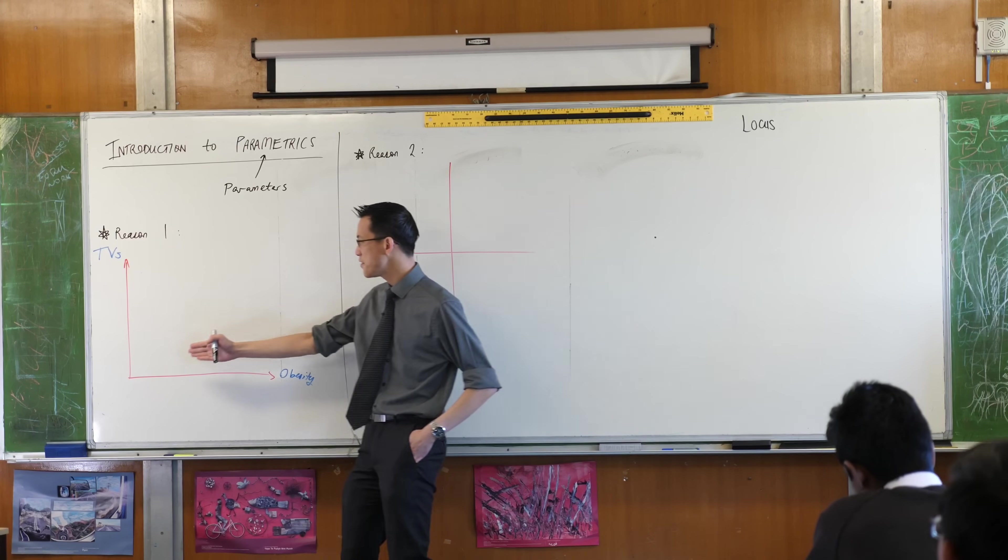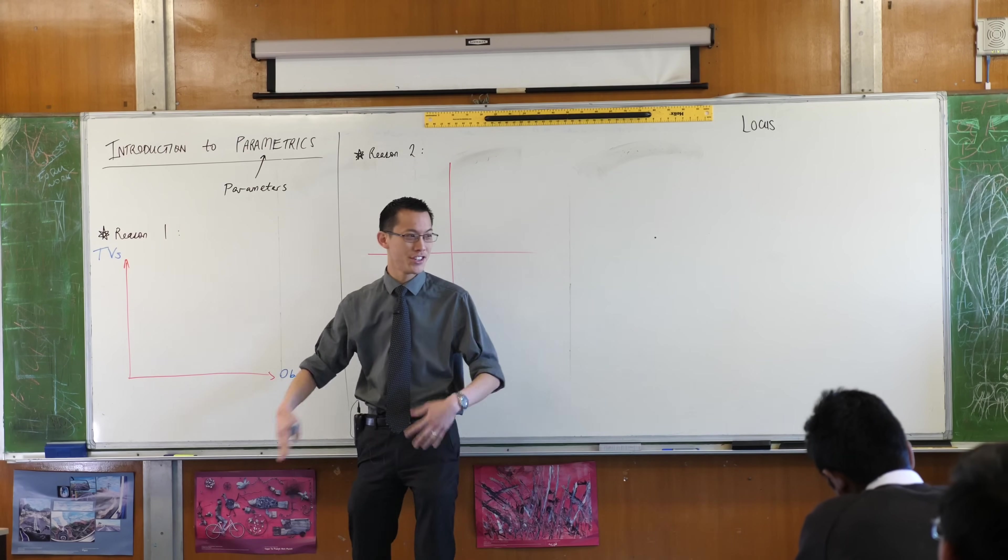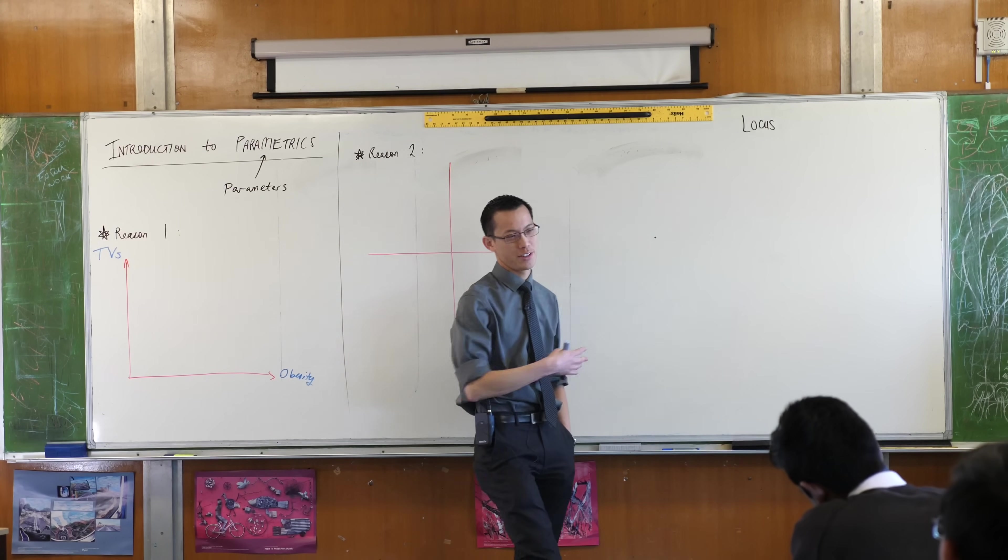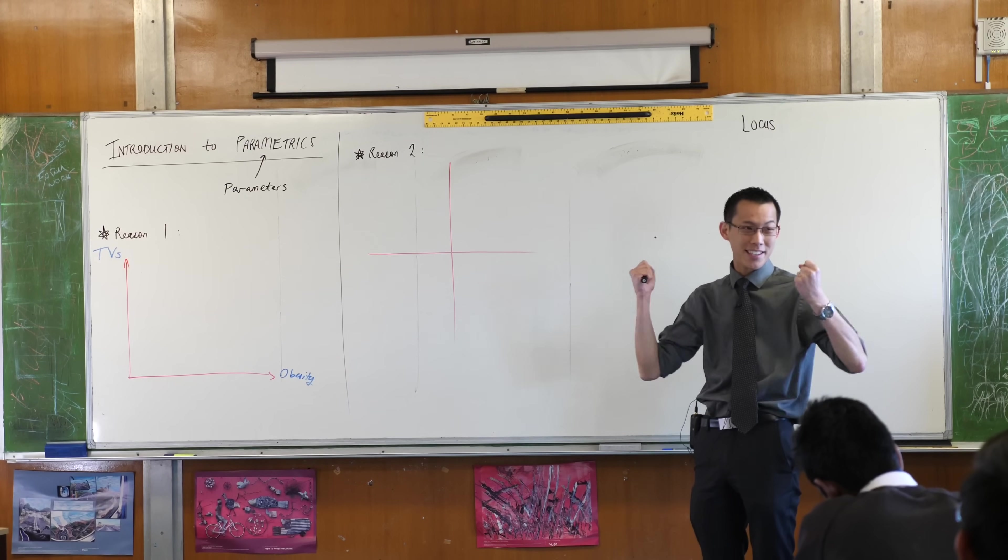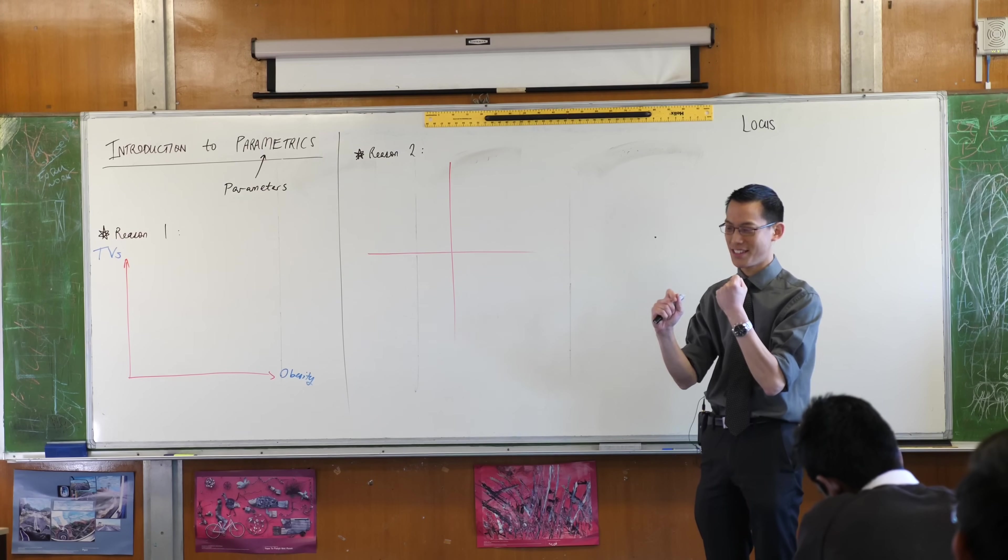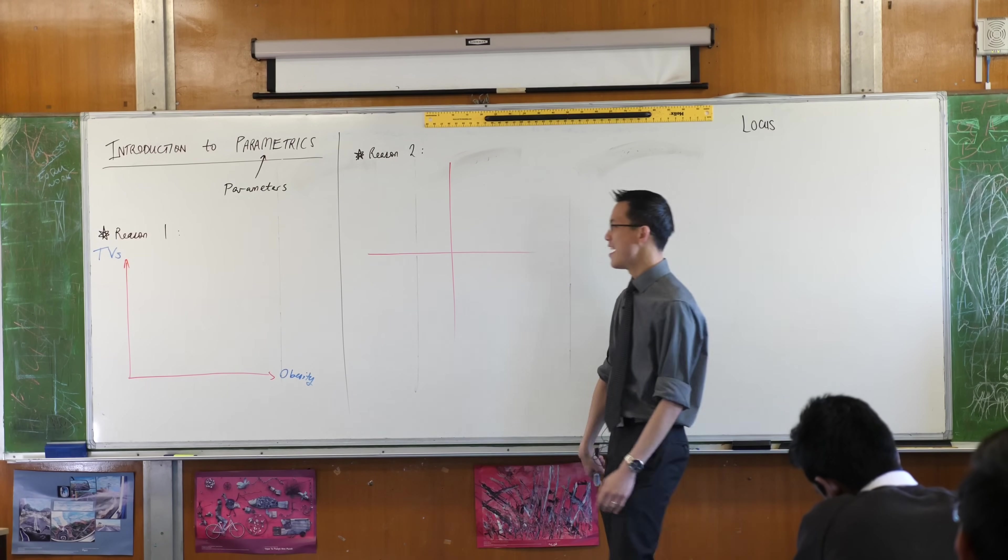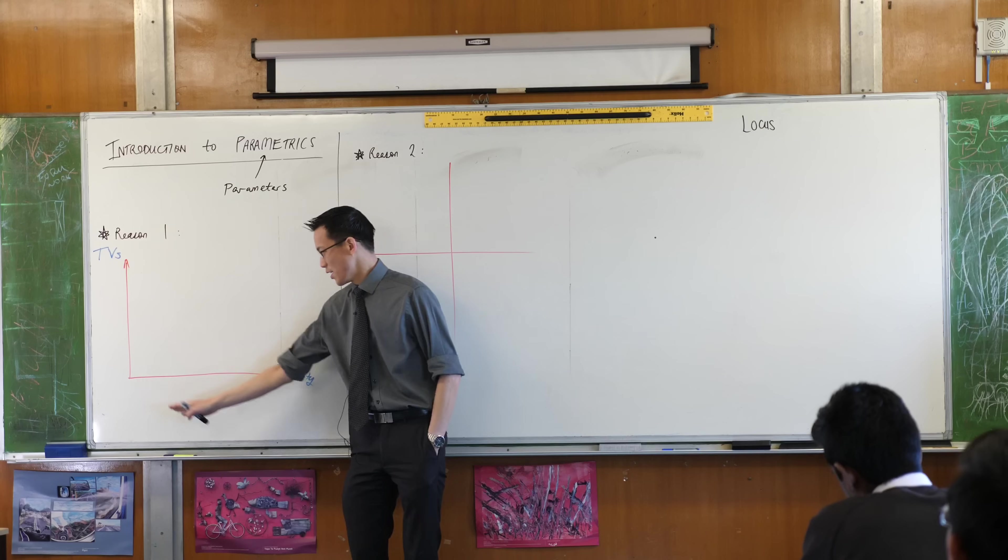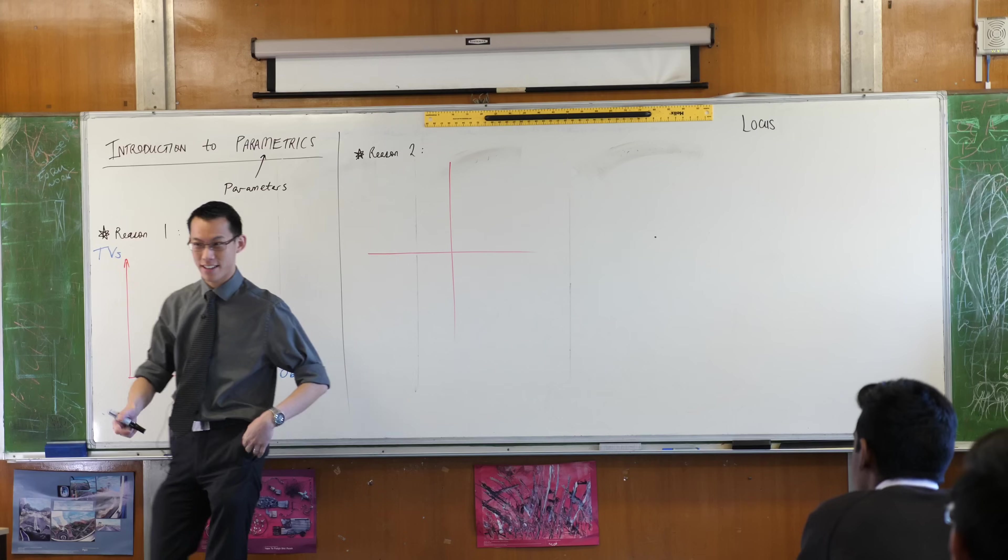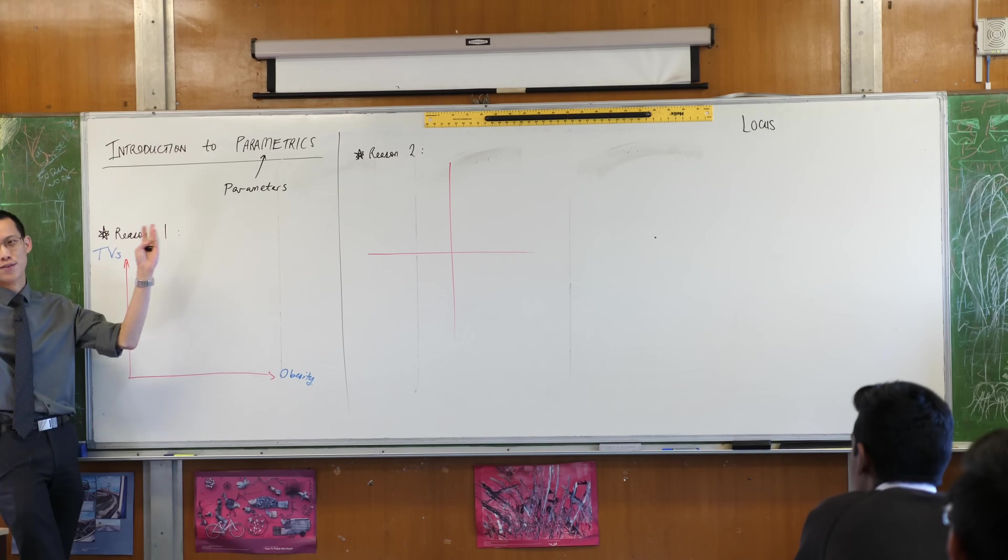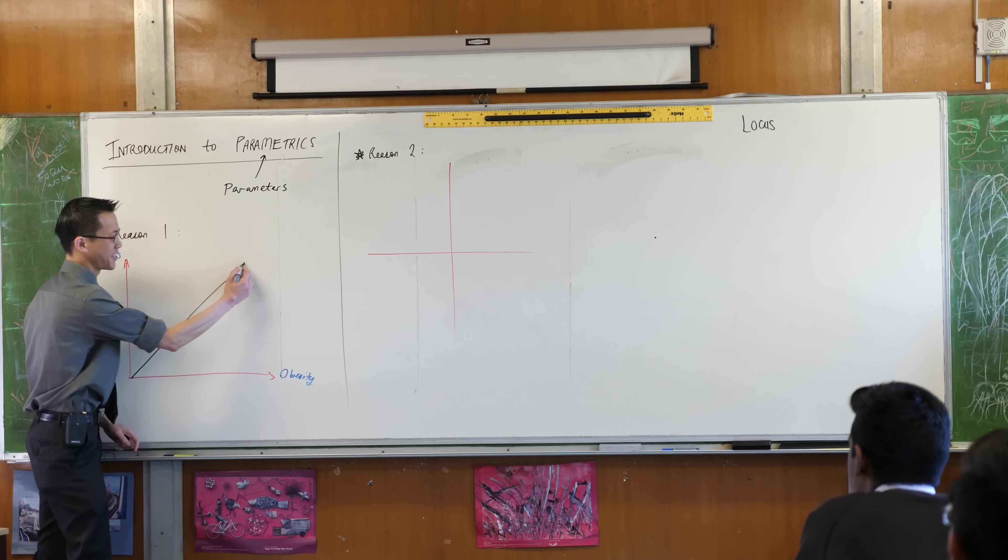As the number of TVs in a household on average increases in a country, you've got some countries that have no TVs at all and then you've got some countries where it's like we have six TVs per household because everyone needs to have two screens to look at at the same time. What do you think would happen to the obesity rates? It might look something like this.